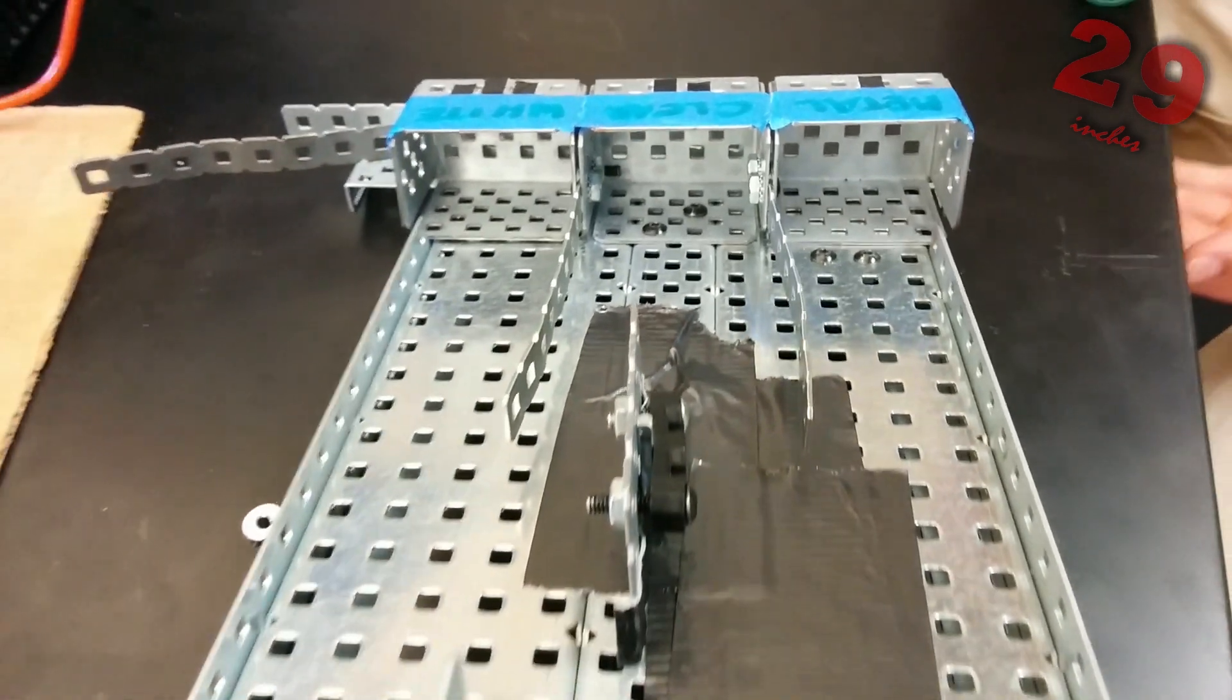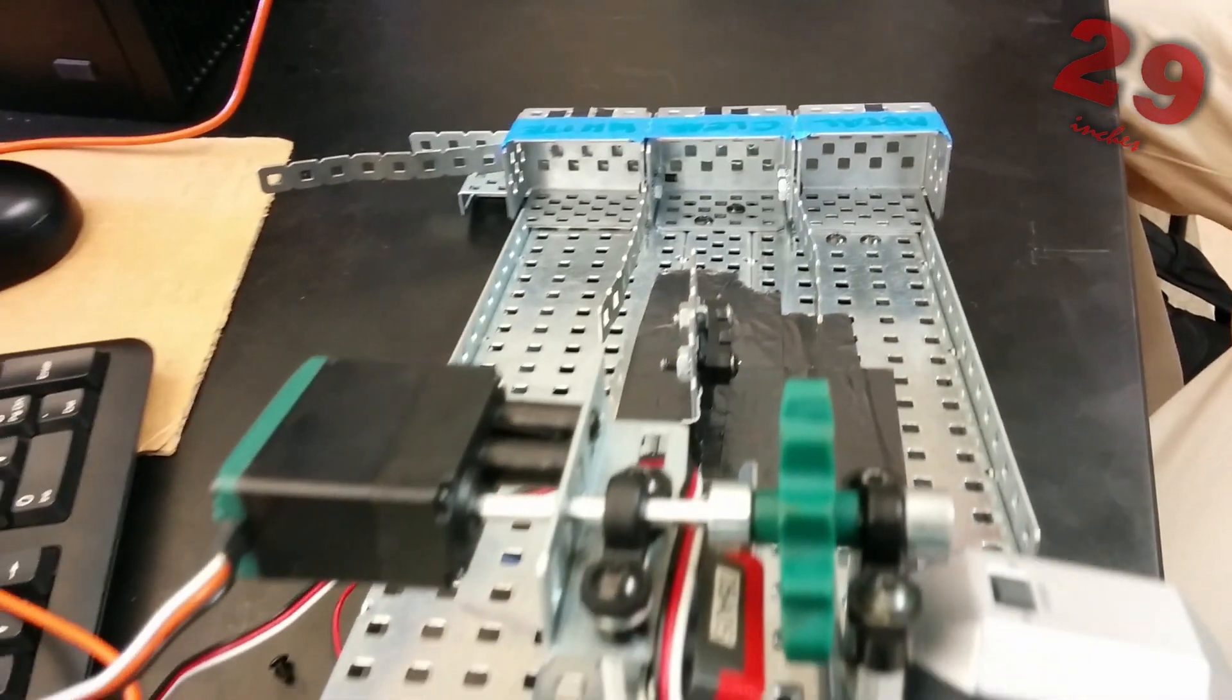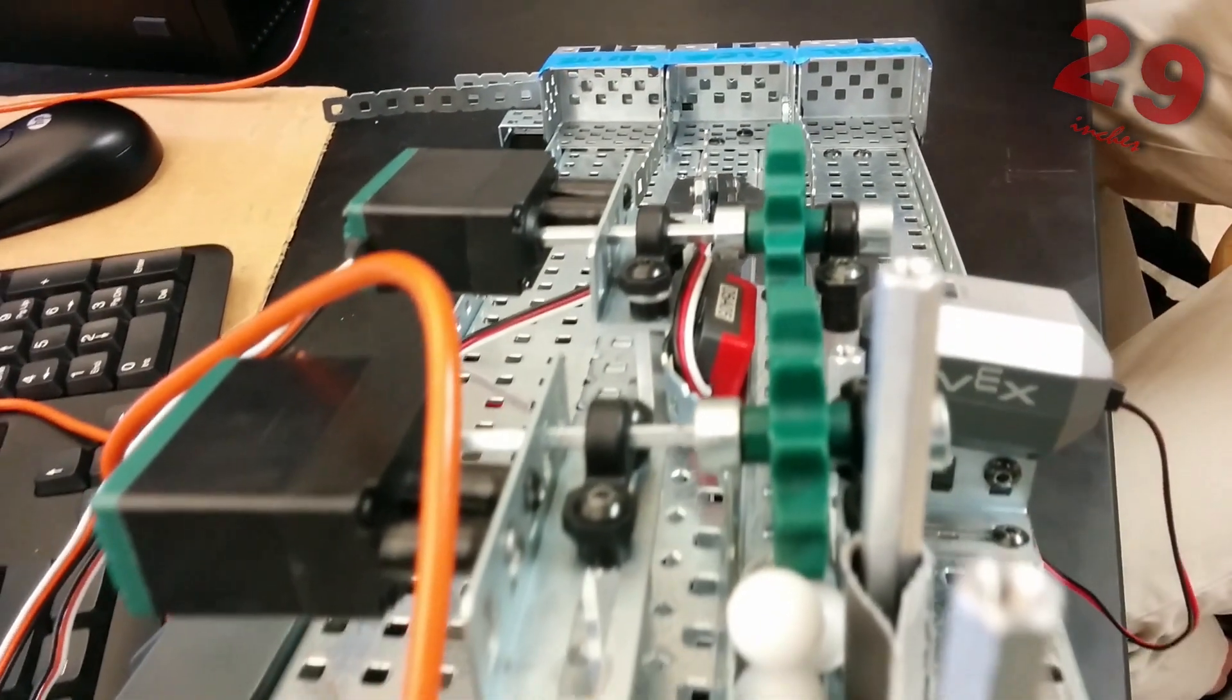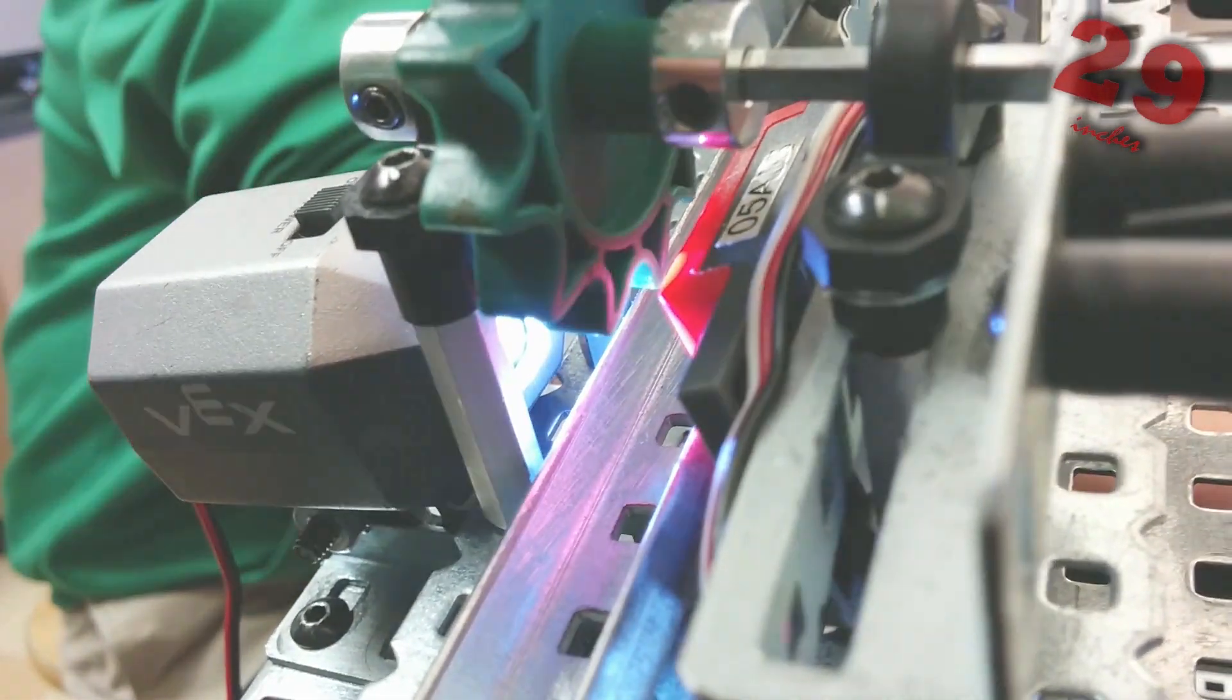The system used two sprockets, one to allow only one marble to pass, and one to stop a marble so it could be read by a light sensor, and a flashlight was used to improve accuracy.